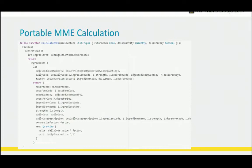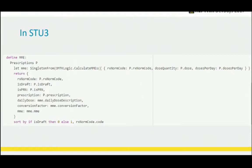This is the actual portable MME calculation. For each medication we pull the ingredients back, then do the conversion factor on that ingredient based on the daily dose and dose form, and that gives us the MME. This is all done in terms of just the core inputs — we didn't express it in terms of any particular data model. We just said we need an RxNorm code, a dose, and the quantity and dose per day. This is CQL. In STU3, when we need to use that calculation against the FHIR data, we call it from the OMTK logic library, pulling out the information from the FHIR resources to pass to that calculation. In STU2 we do the same thing, just using medication order instead of medication request.